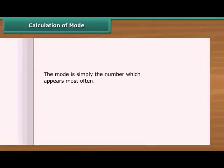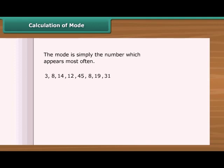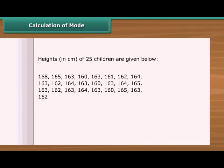The mode is simply the number which appears most often. See this example — we have a few numbers here. How can we find out the mode? To find the mode, we need to first put the numbers in order, then count how many of each number, and then see which number appears most often. In this case, 8 appears 2 times, so the mode is 8. Look at this data — it shows the height of 25 children in a class. Let us find out the mode of their heights.